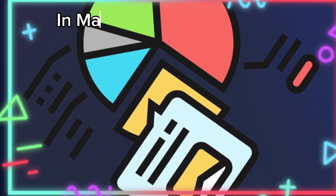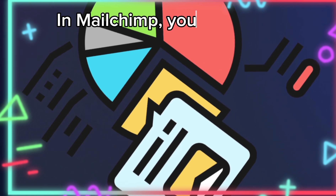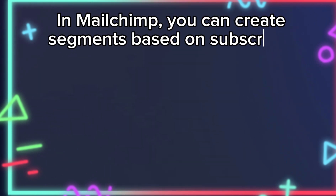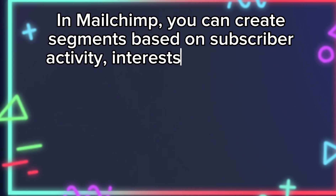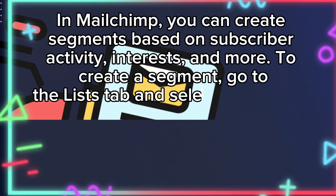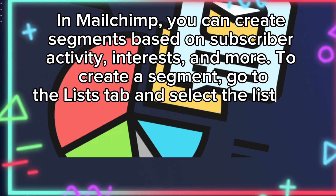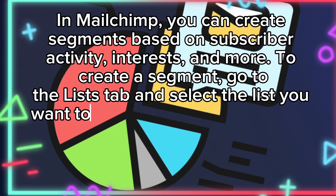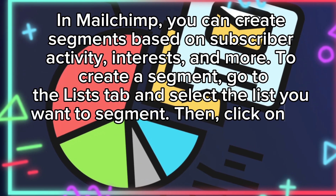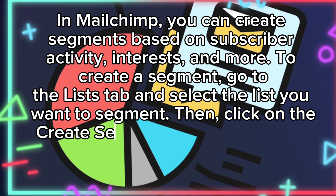In MailChimp, you can create segments based on subscriber activity, interests, and more. To create a segment, go to the Lists tab and select the list you want to segment, then click on the Create Segment button and select the criteria you want to use for your segment.